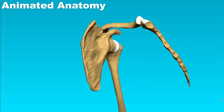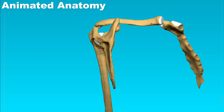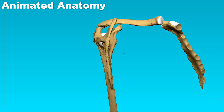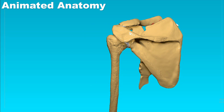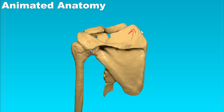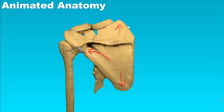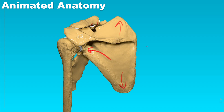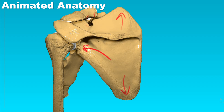The scapula is a flat bone, not a long bone as the clavicle was. It has three angles: the superior angle, the inferior angle, and the lateral angle. Besides these three angles, it also has three margins: the superior margin, the medial margin, and the lateral margin.